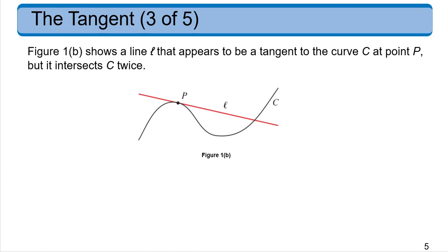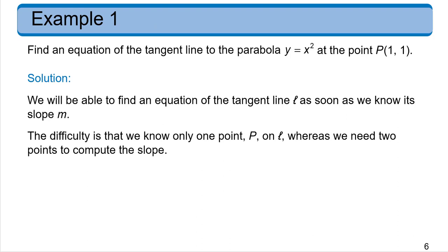Now since a tangent line is a straight line, let's see if we can come up with an equation of that straight line, you know, our good old y equals mx plus b for it touching a curve at a given point. So in this case, we want to find a tangent line that is touching the parabola y equals x squared, and we're going to choose the point one, one. And you'll be able to see that we can find an equation of the tangent line as soon as we know its slope.